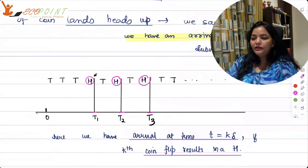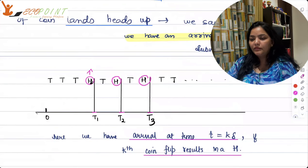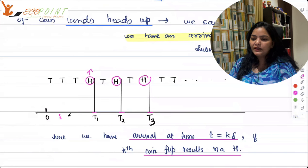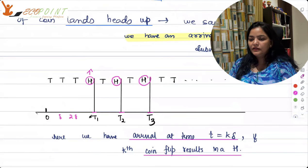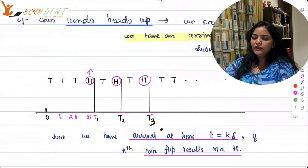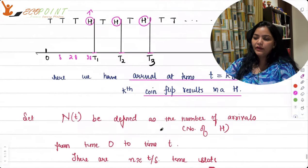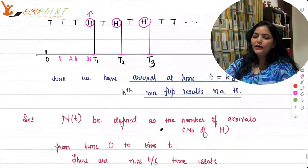k is which coin flip results in a head. kth coin, when it gives heads, that is k. So what's happening here, fourth coin is giving me heads. So here, this t1 is, this becomes your t is 4 delta. Of course, because this is 0, this is delta, this is 2 delta, this is 3 delta. So kth coin flip results in a head here.